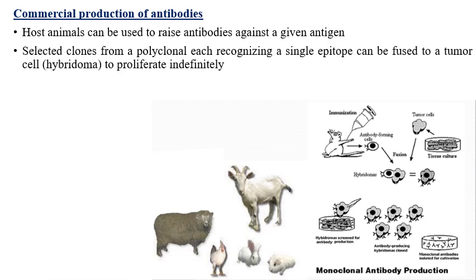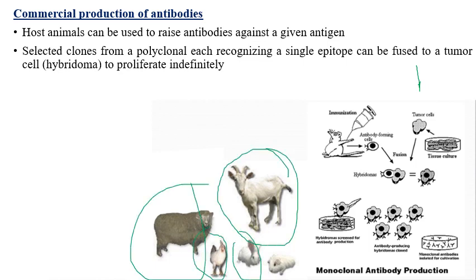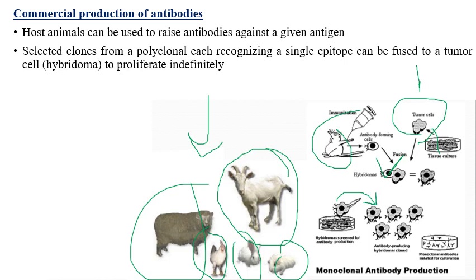For commercial production of monoclonal antibodies, the same host can be immunized to raise antibodies against a given antigen. Different types of animals such as goat, sheep, hen, rabbit, and mice can be used. The selected animal is immunized, followed by cell fusion, tumor cell harvesting, tissue culture, and production of the required specific antibodies.